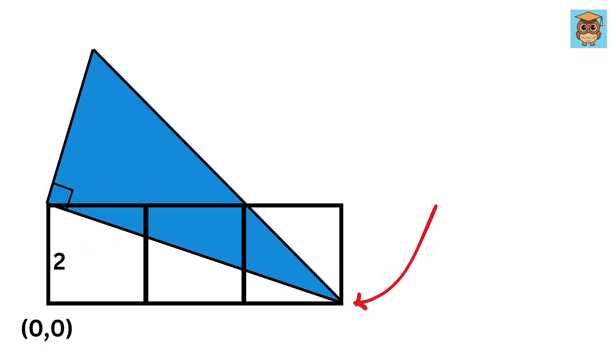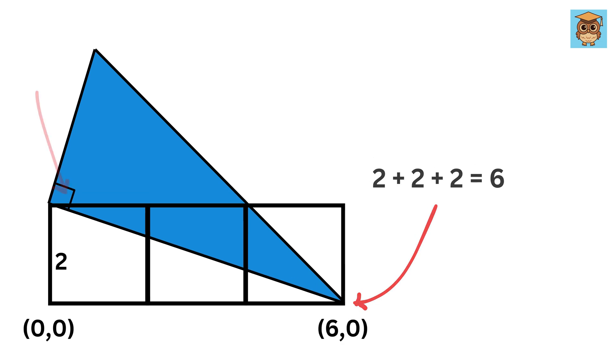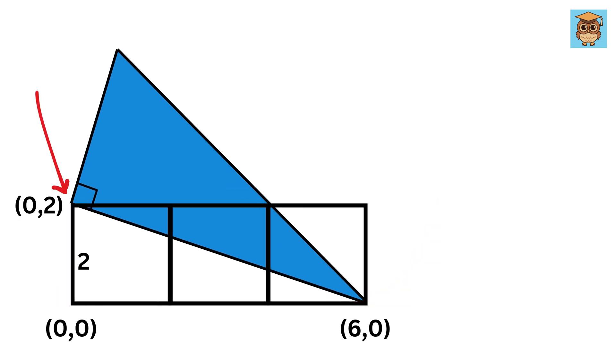Thus the coordinate of this vertex will be two plus two plus two, or six comma zero. Then this point will be zero comma two. Also the coordinate of this point will be four in x direction and two units in the y direction.